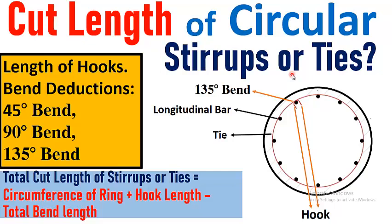Welcome back to my YouTube channel Being Engineer. In this video lecture we are going to learn how to find the cut length of a circular stirrup or ties. The shear reinforcement in case of beams is called stirrups and in case of columns it is called ties. In this video we are going to discuss how to find the cut length of a stirrup using a formula.